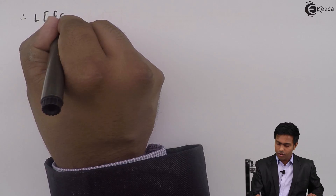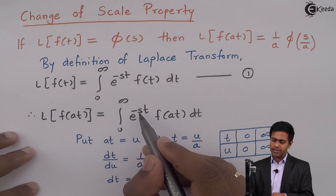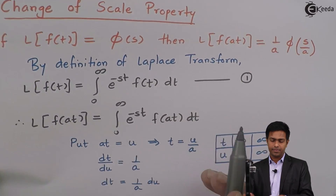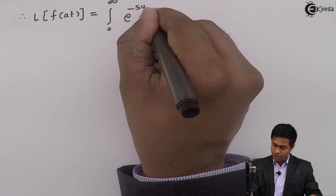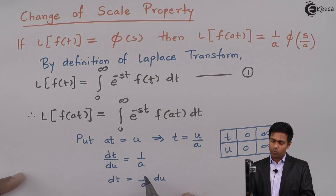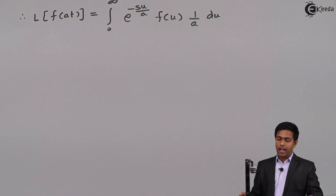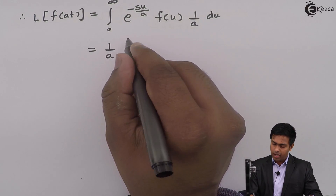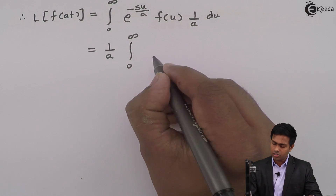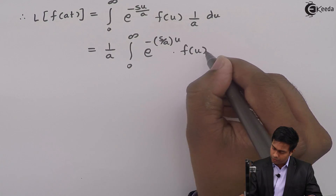Substituting into the integral, Laplace of f(at) equals the integral from 0 to infinity of e raised to minus s·(u/a) times f(u) times (1/a) du. Taking the constant 1/a outside, we get (1/a) times the integral from 0 to infinity of e raised to minus (s/a)·u times f(u) du.